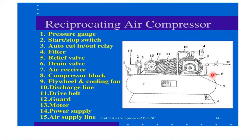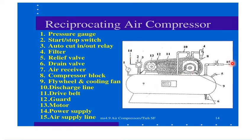Component five is the relief valve, six is the drain valve, seven is the air receiver, eight is the compressor block, nine is the flywheel and cooling fan, ten is the discharge line, eleven is the drive belt, twelve is the guard, thirteen is the motor, fourteen is the power supply, and fifteen is the air supply line. These are the main components of a reciprocating air compressor.